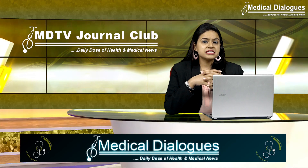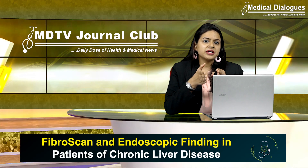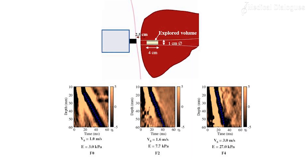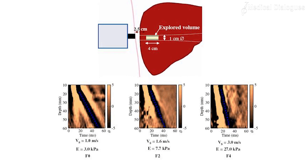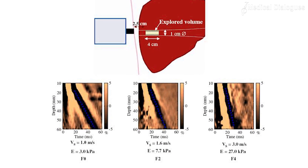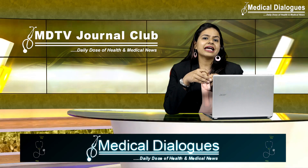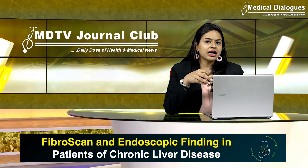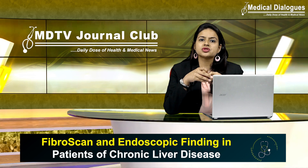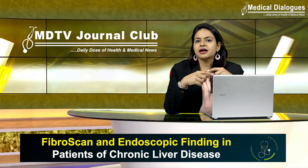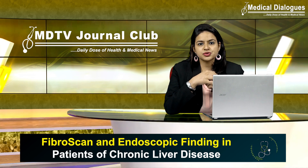The AST to APRI score was calculated. Liver fibrosis was estimated with the help of the FibroScan, and evidence of portal hypertension was documented by upper GI endoscopy.